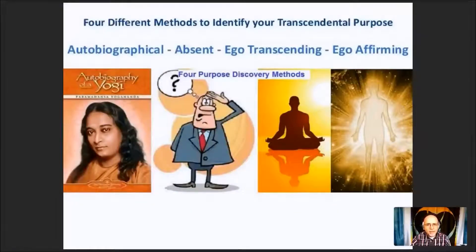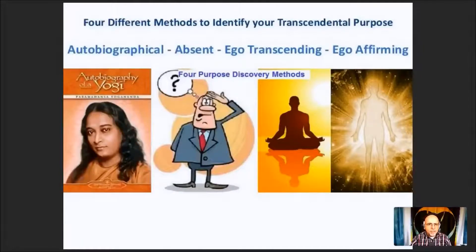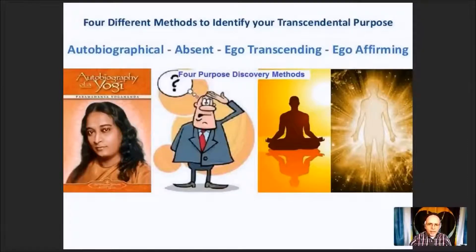Today we will explore four different methods to identify our transcendental purpose. I discovered these four methods by looking at all the books and teachings I could find on purpose. They fall into four broad categories: autobiographical — also called the indirect method by Tim Kelly — the absent method, also called the direct method, ego-transcending methods, which fall into spiritual categories, and ego-affirming methods.